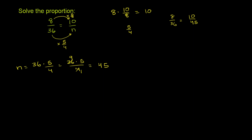Another way to think about it: what do we have to multiply 8 by to get its denominator? How much larger is the denominator 36 than 8? Let's divide 36 over 8. So 36 over 8 — we can simplify by dividing numerator and denominator by 4, their greatest common divisor. That's the same thing as 9/2. So if you multiply the numerator by 9/2, you get the denominator.